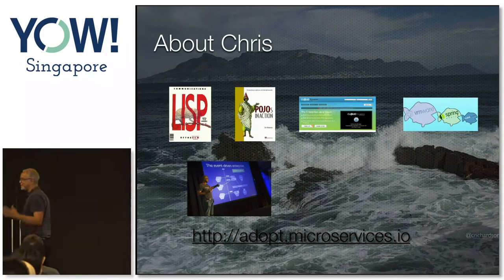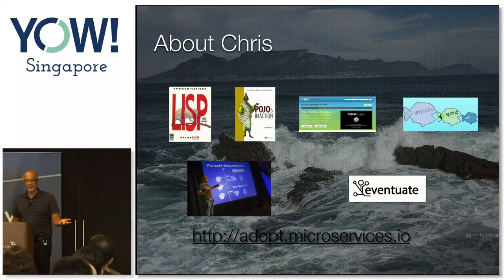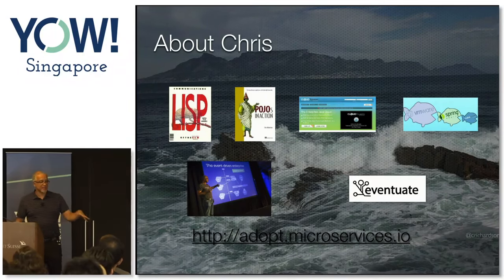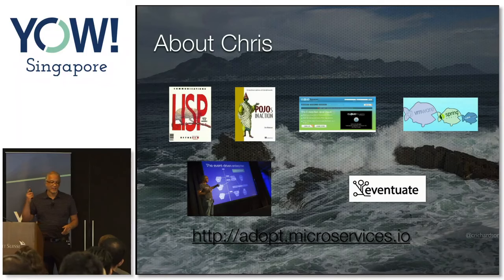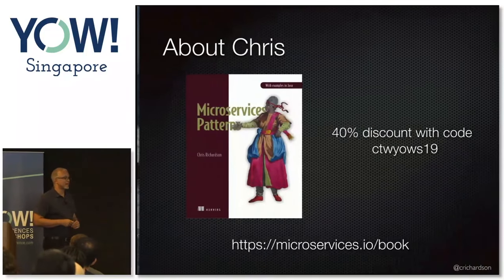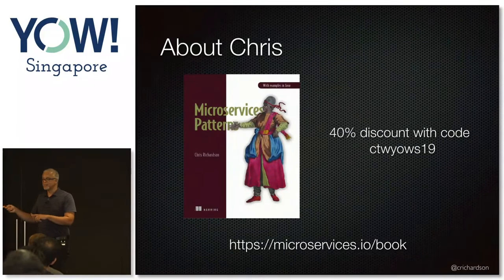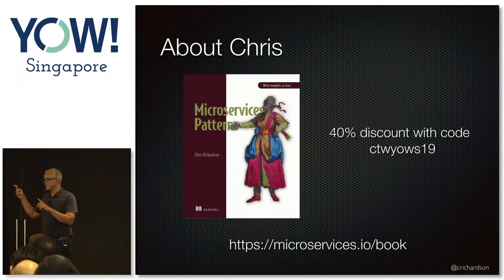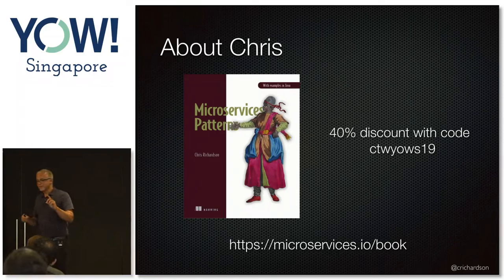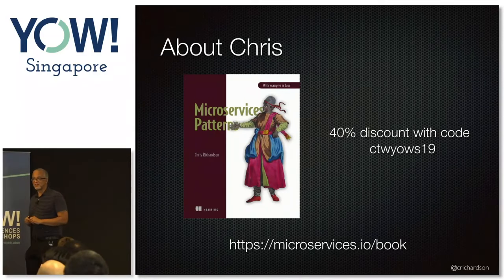I have a startup where we're building software to simplify the development of business applications that use the microservice architecture. My book, Microservices Patterns, came out back in November. And with a discount code, you can get Manning products for an amazing 40% off.